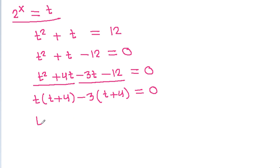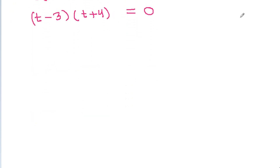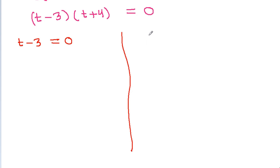So we get (t plus 4)(t minus 3) equals 0, meaning either t plus 4 equals 0 or t minus 3 equals 0.